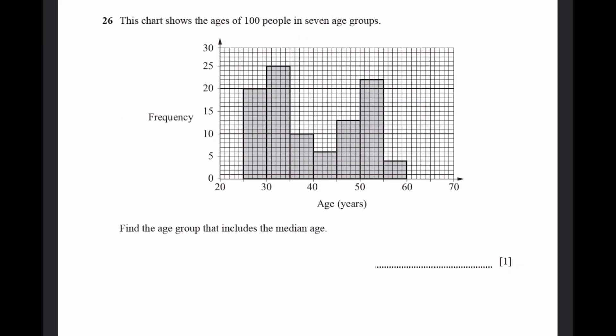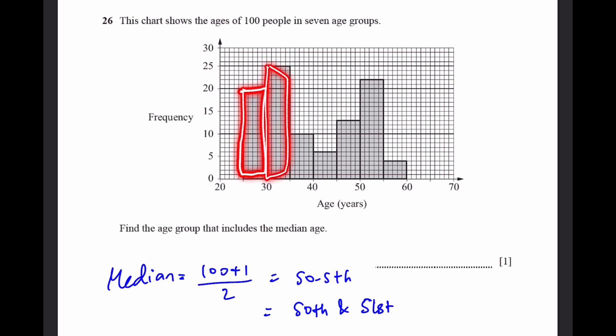Question 26. This chart shows the ages of 100 people in 7 age groups. Find the age group that includes the median age. The median is equal to 100 plus 1 by 2, which equals the 50th and 51st ages. In this, we have 20, and then 25. So the cumulative frequency will be 20, 45, 55. We've got above 50 and 51. So in this age group, we will get 50 and 51. And that age group is 35 to 40, which includes the median.